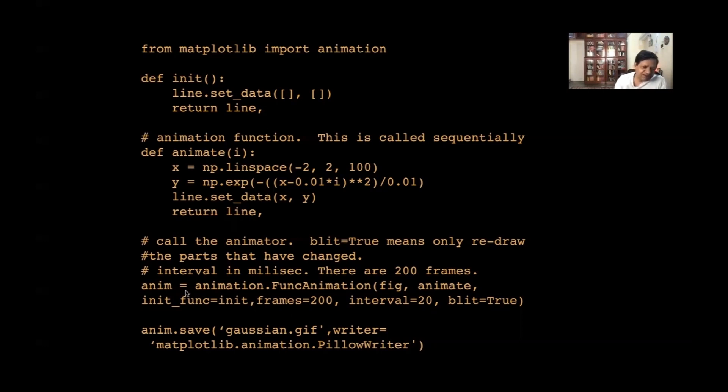Now, we can. So, once this anime is already created, I can save it in a GIF file, zip file. And we encode it. So, this file is there.